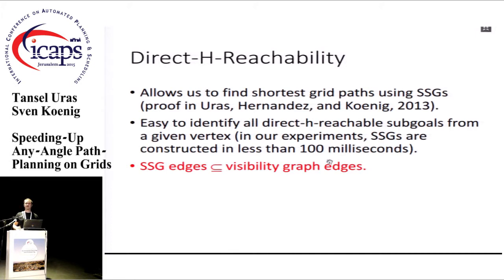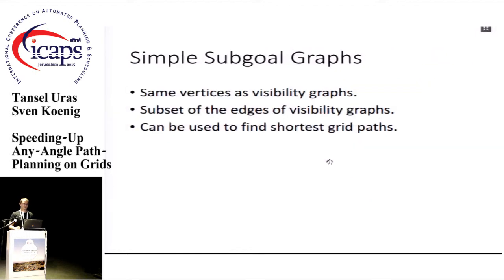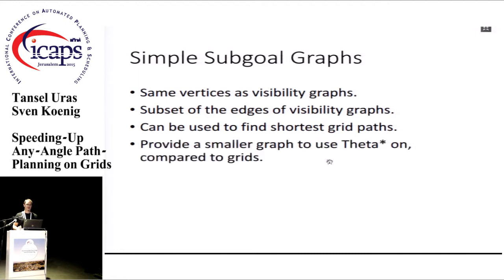The set of simple sub-goal graph edges is a subset of the visibility graph edges. Direct edge-reachability means all the blue paths must be unblocked, from which we can infer the red path must also be unblocked. So simple sub-goal graphs have the same vertices as visibility graphs but only a subset of the edges, and that is sufficient to find shortest grid paths. They are faster to search compared to grids, which is why we want to use Theta star on sub-goal graphs instead of on grids.